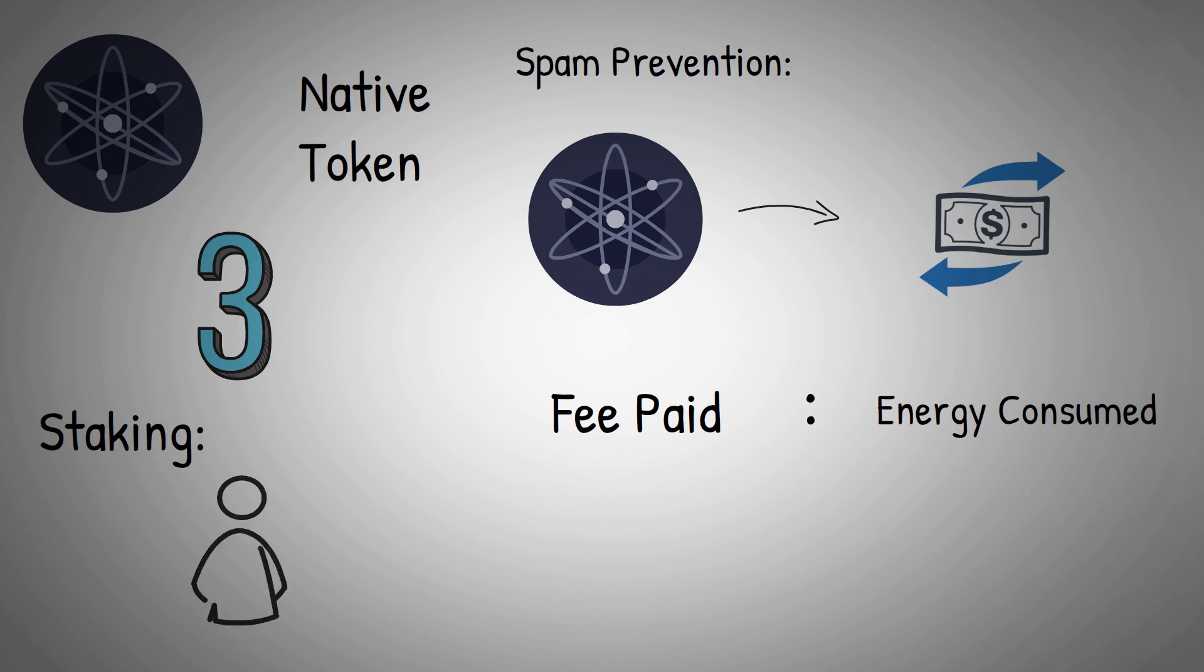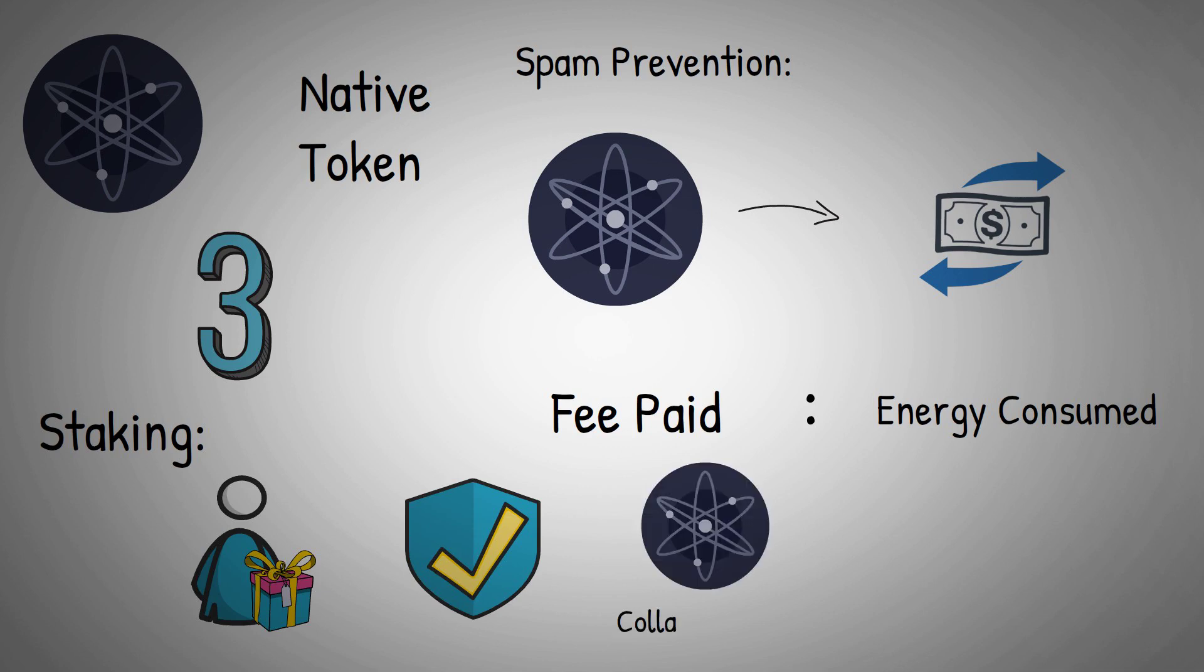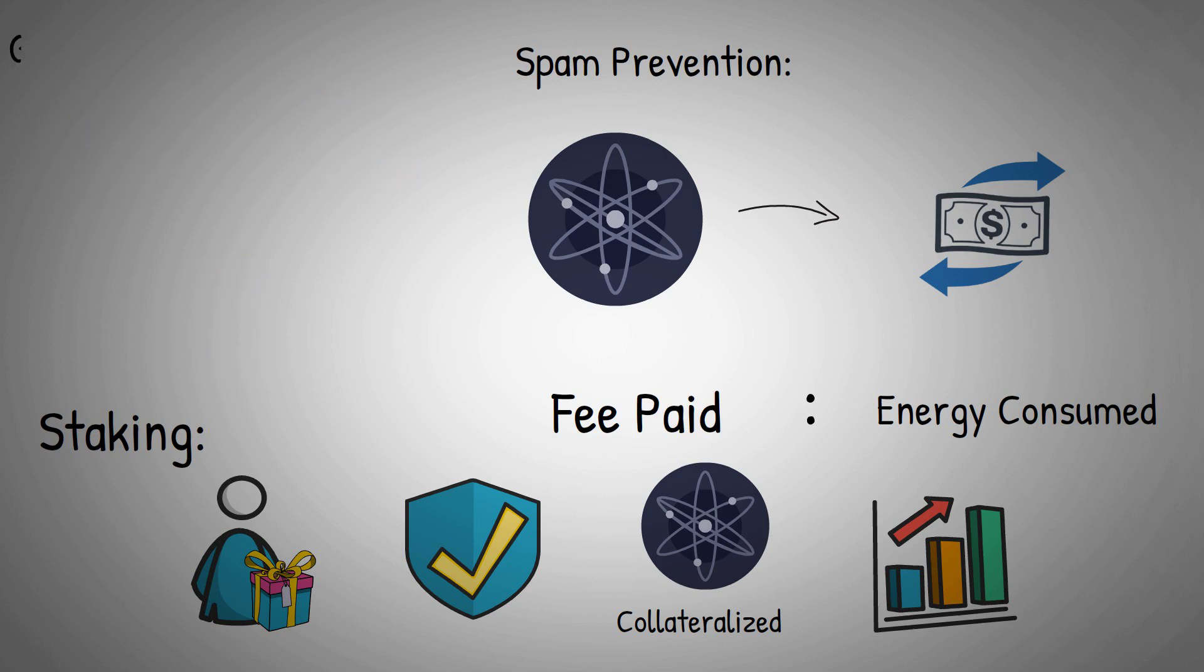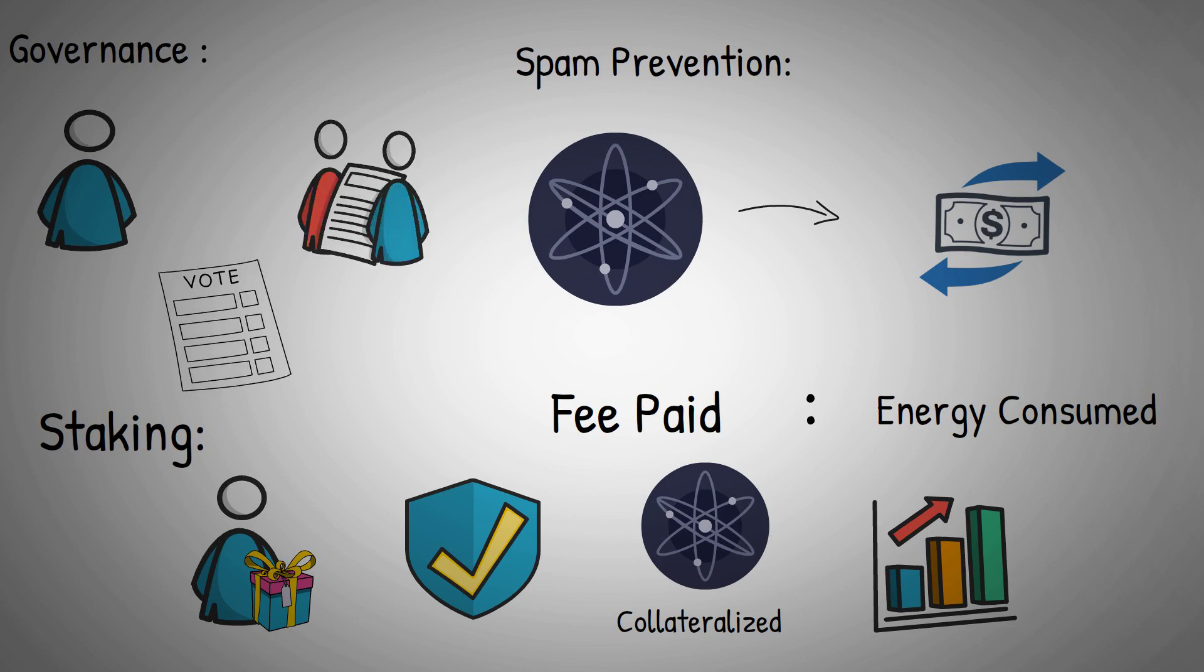Staking enables users to receive rewards while increasing the network's overall security. The more Atom tokens are collateralized, the higher the cost of attacking the network, hence increased network security. Governance: Holders of Atom tokens control the protocol's developments by voting on proposals with their staked Atom.